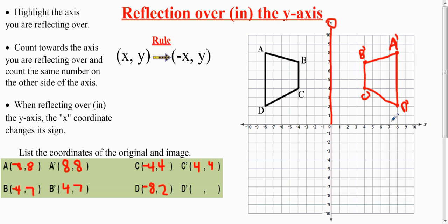D prime is—I don't know what I put here—D prime is (8, 2). Sometimes my letters do not look good at all. That's basically it.